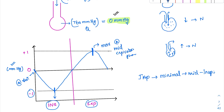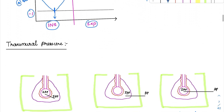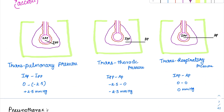Now coming to transmural pressure — the third group. 'Trans' means across. Previously we looked at pressures inside the alveoli and inside the pleura. Transmural pressure looks at pressure differences across structures. There are three types: transpulmonary pressure, transthoracic pressure, and transrespiratory pressure.